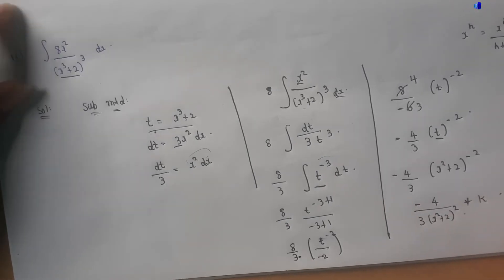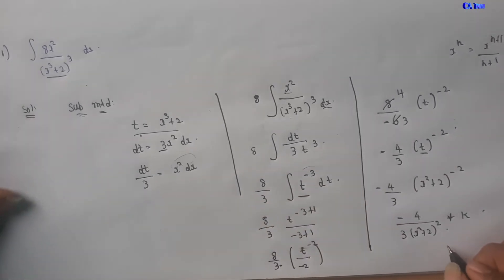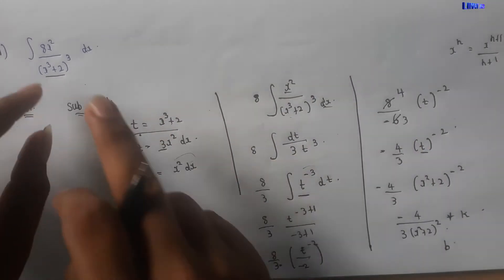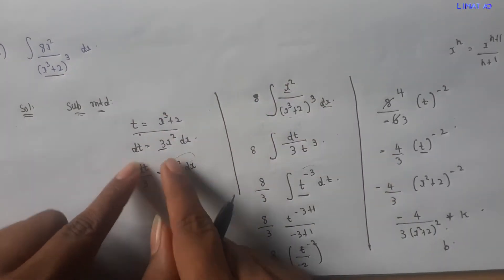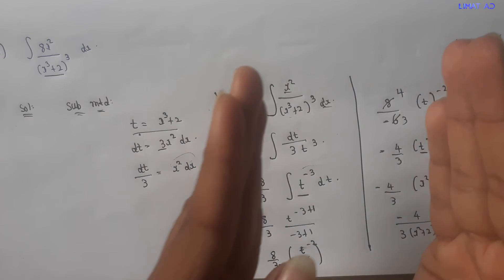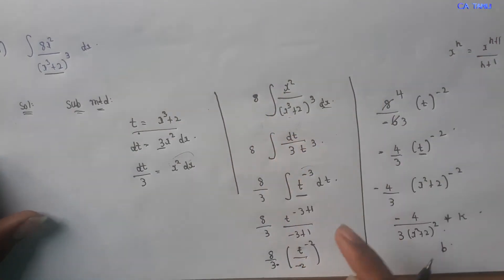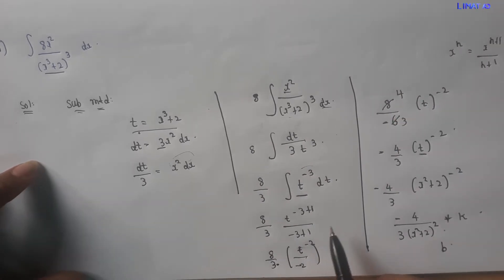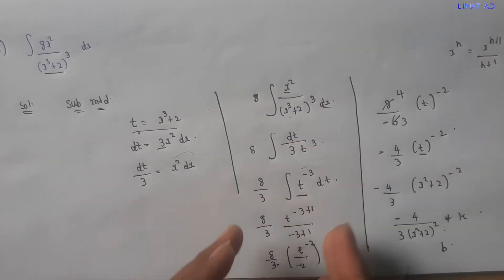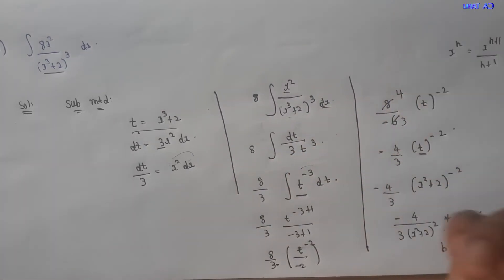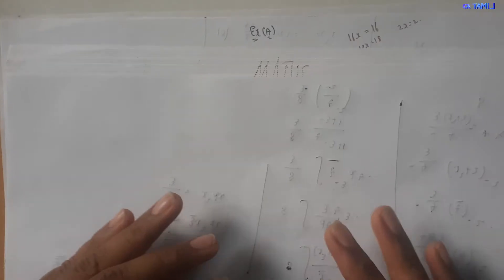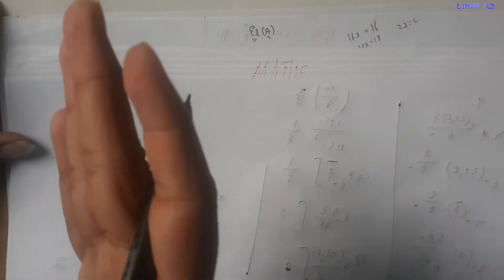The final answer is minus 4 divided by 3 times (x³ + 2) whole squared, plus k. This is our final answer — option B is correct. That completes the 11th sum using the substitution method: set t, differentiate, apply the integral formula, cancel, and substitute back.